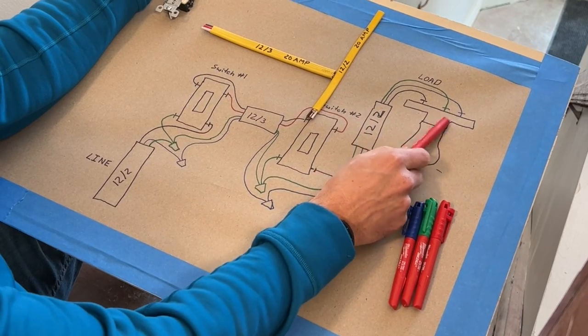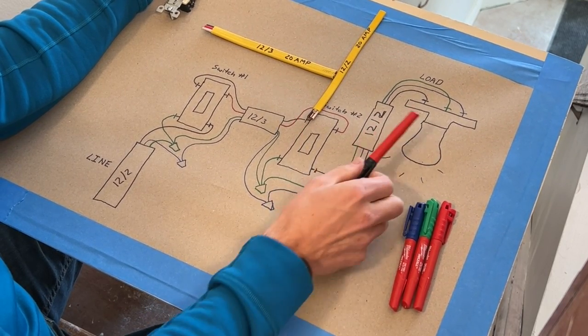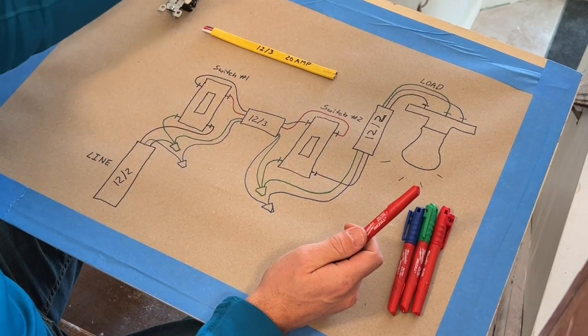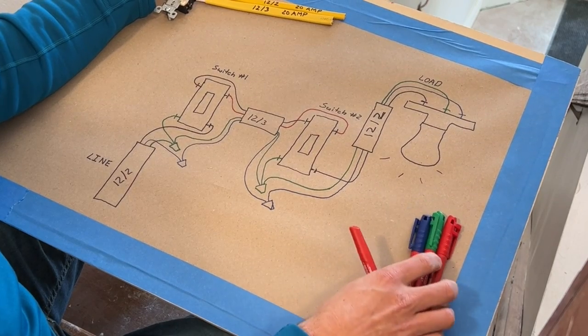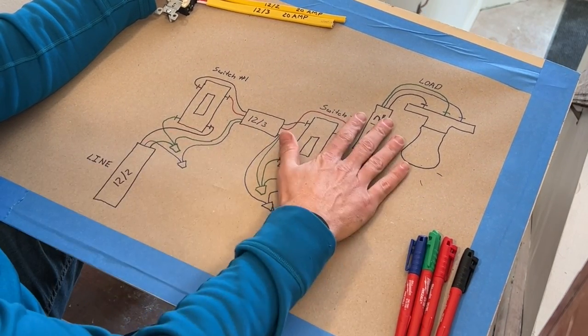And then you'll have your neutral going to your fixture. And then depending on what kind of fixture you have, you might be able to ground that fixture, or you might just be grounding the actual box that the fixture is mounted to. So that's the overall circuit.